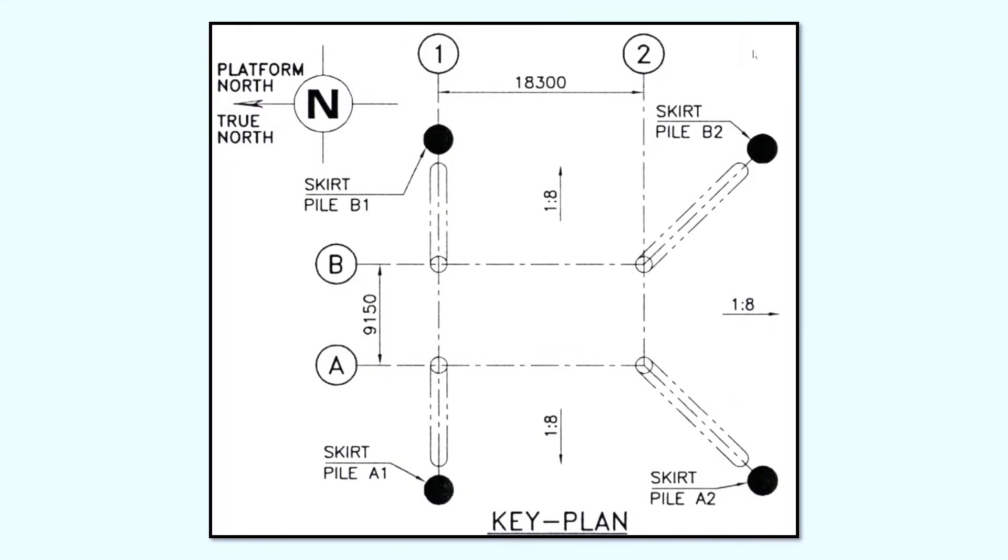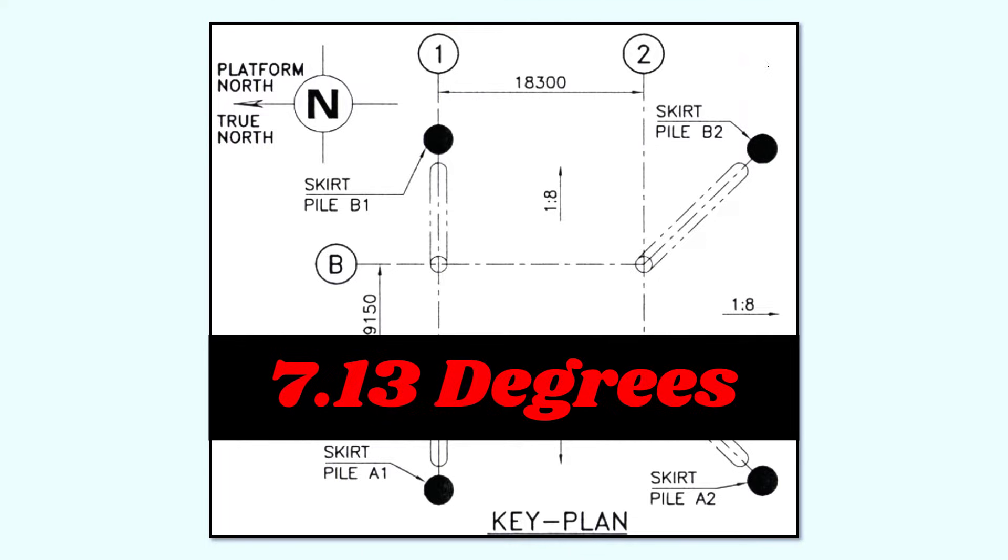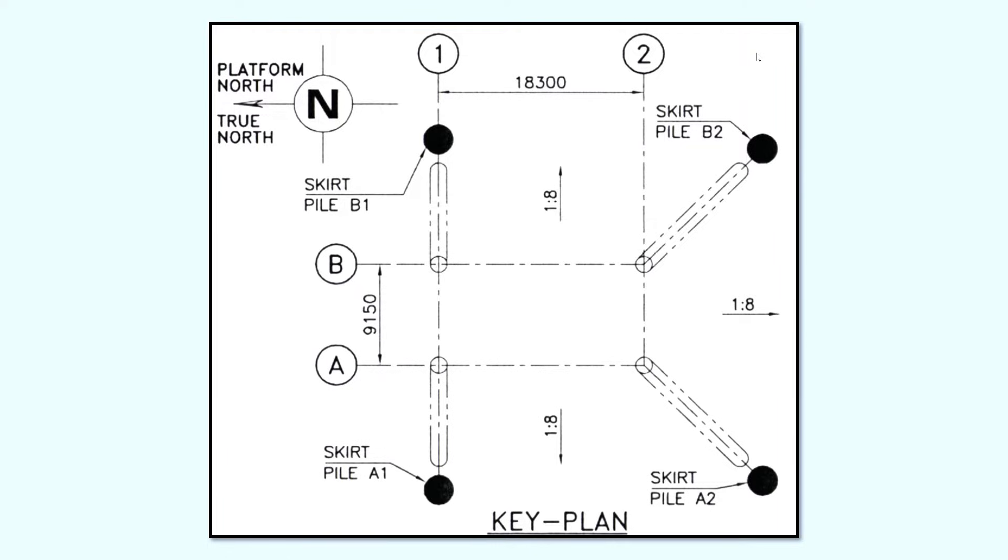As you see on this drawing, the legs have a 1/8th batter. That means the jacket legs spread out horizontally by 1 meter for every 8 meters of vertical length. What it means is that the legs are slanted by 7.13 degrees from the vertical. How to find it? Simple tan theta formula.